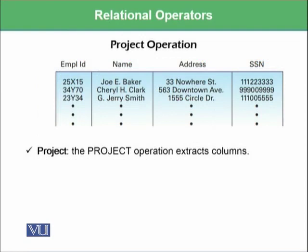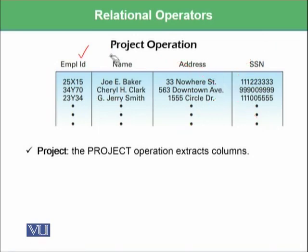There is another operator known as the project operation. This project operation tries to project only the required columns. For example, you can say that you just need employee ID and name, and you don't need address and SSN. Or you can say that you need name, address, and SSN, and you do not need employee ID.